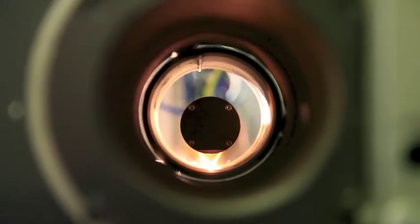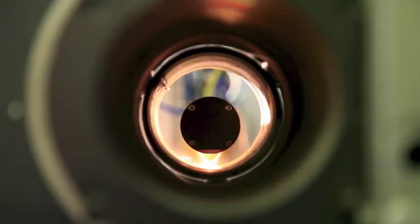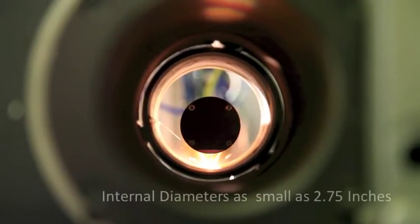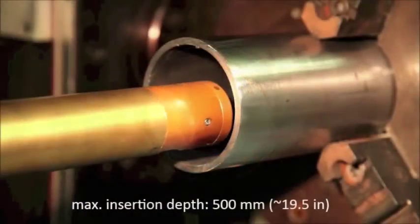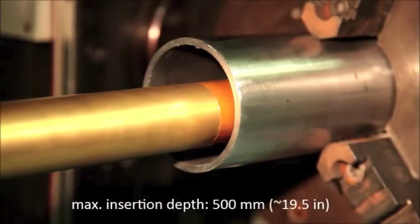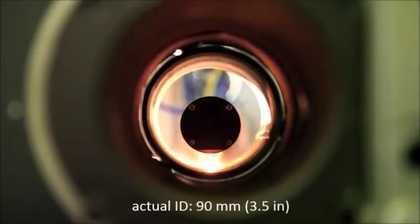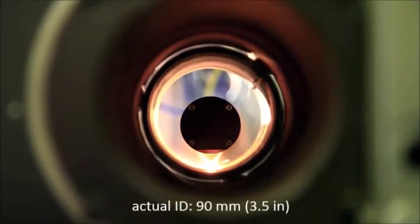The new ID cladding head, mounted to a CNC handling system, can process internal diameters as small as 2.75 inches with a maximum insertion depth of 500 millimeters. Double-sided access means IDs as long as one meter can be clad.